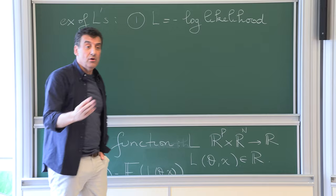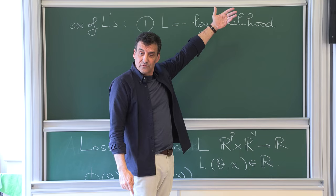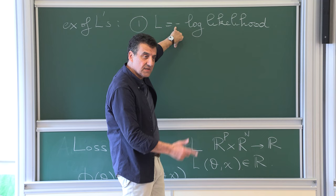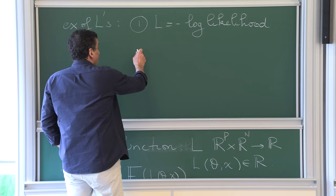Examples of L: of course you take the likelihood — typically the log likelihood. You take the sum of logs, which gives you the log likelihood. I put a minus sign here because in statistics you usually want to maximize the likelihood, but I will be like a physicist and minimize everything.